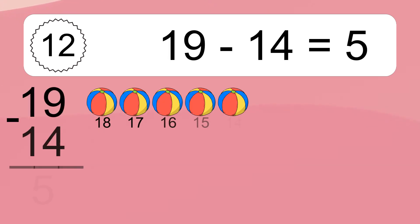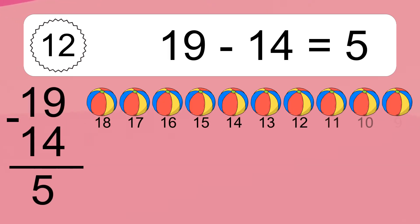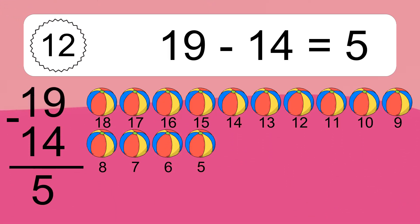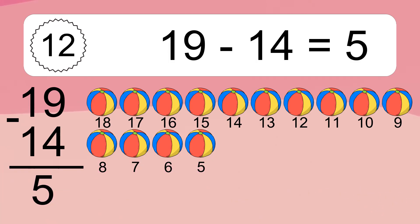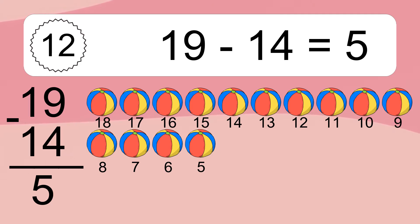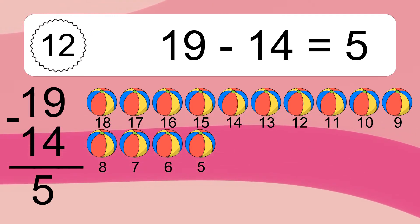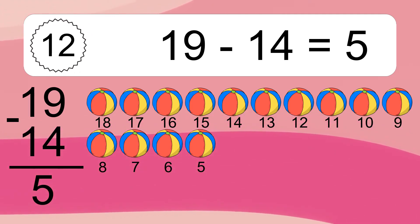19 minus 14 equals what? 19 minus 14 equals 5. Let's count it: 18, 17, 16, 15, 14, 13, 12, 11, 10, 9, 8, 7, 6, 5.